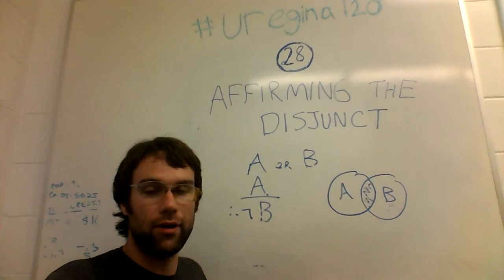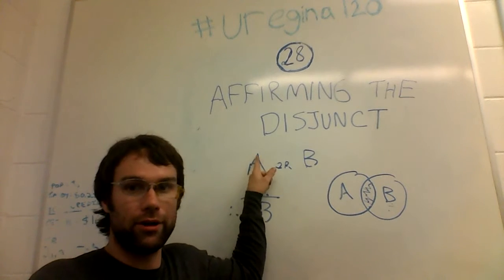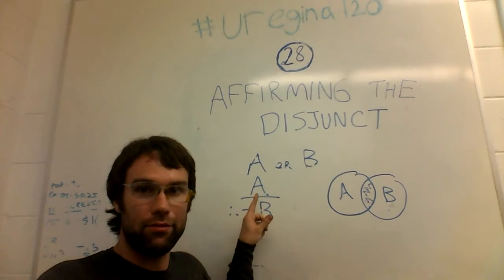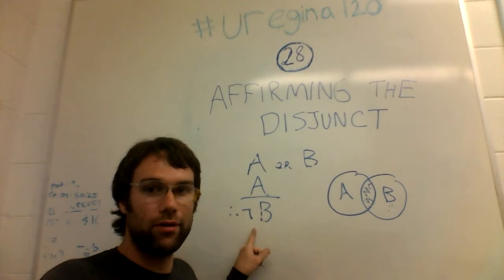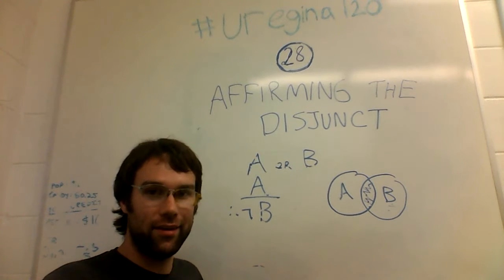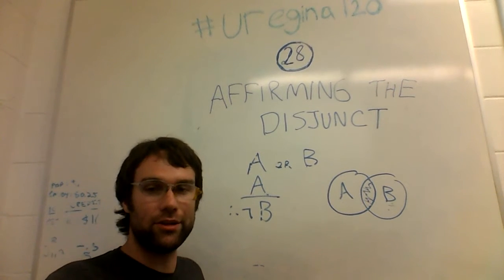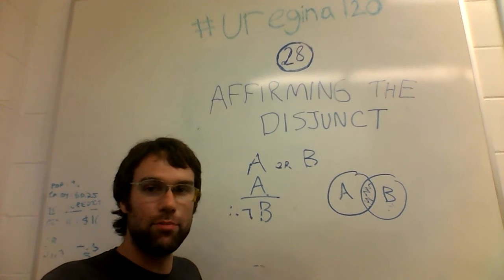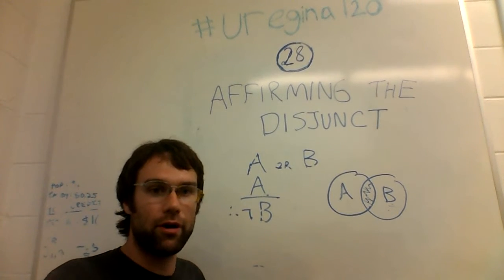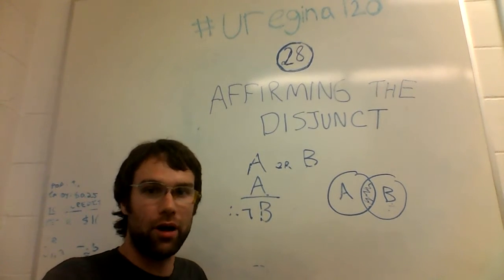Same thing with poverty or prosperity. If you have prosperity, therefore no poverty. Again, invalid form, logically not necessary. It's entirely possible that a society with a lot of prosperous people will also have a lot of poverty in it.